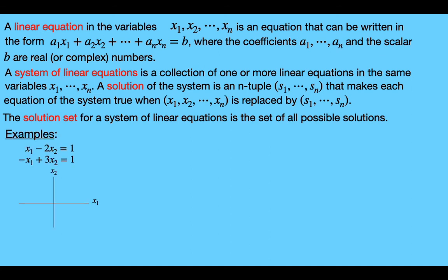Our first example is a system of linear equations with two linear equations and two unknown variables. The first equation is x sub 1 minus 2x sub 2 equals 1, and the second equation is negative x sub 1 plus 3x sub 2 equals negative 1. Now we're going to graph these equations on the x sub 1, x sub 2 plane.